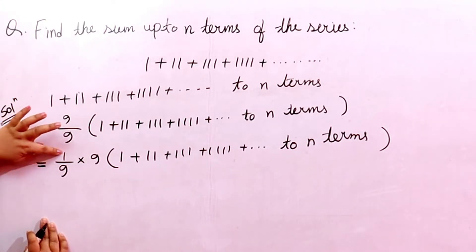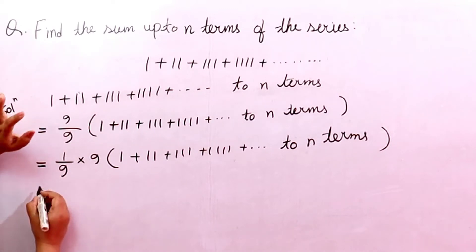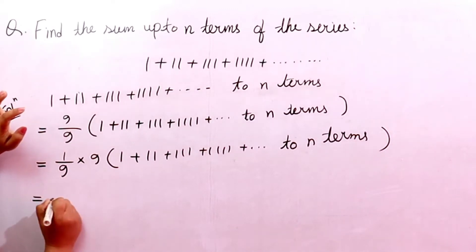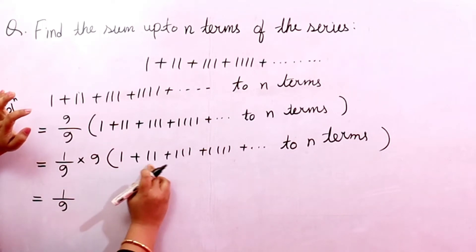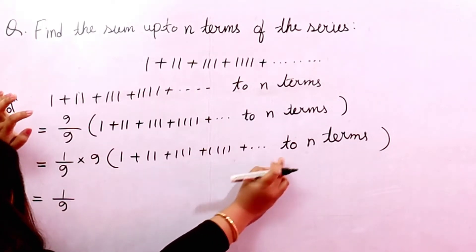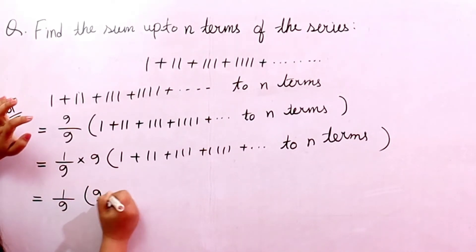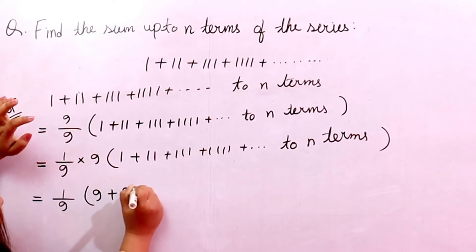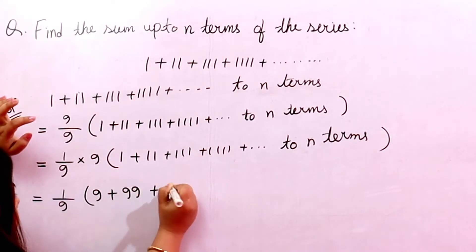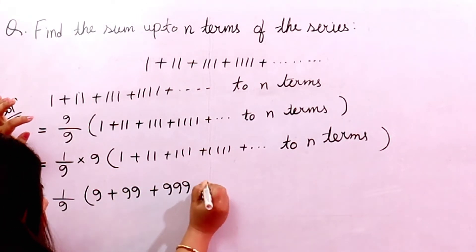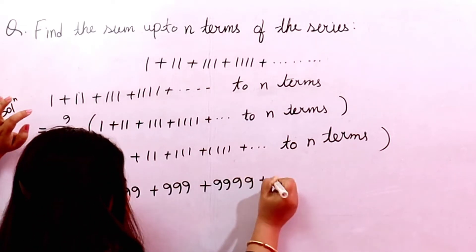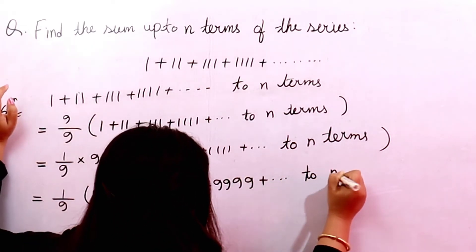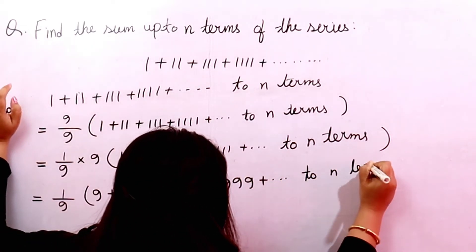We now arrange as 1/9 times 9. In the next step, we multiply 9 with each value in the series, so it becomes 9 + 99 + 999 + 9999, up to n terms.